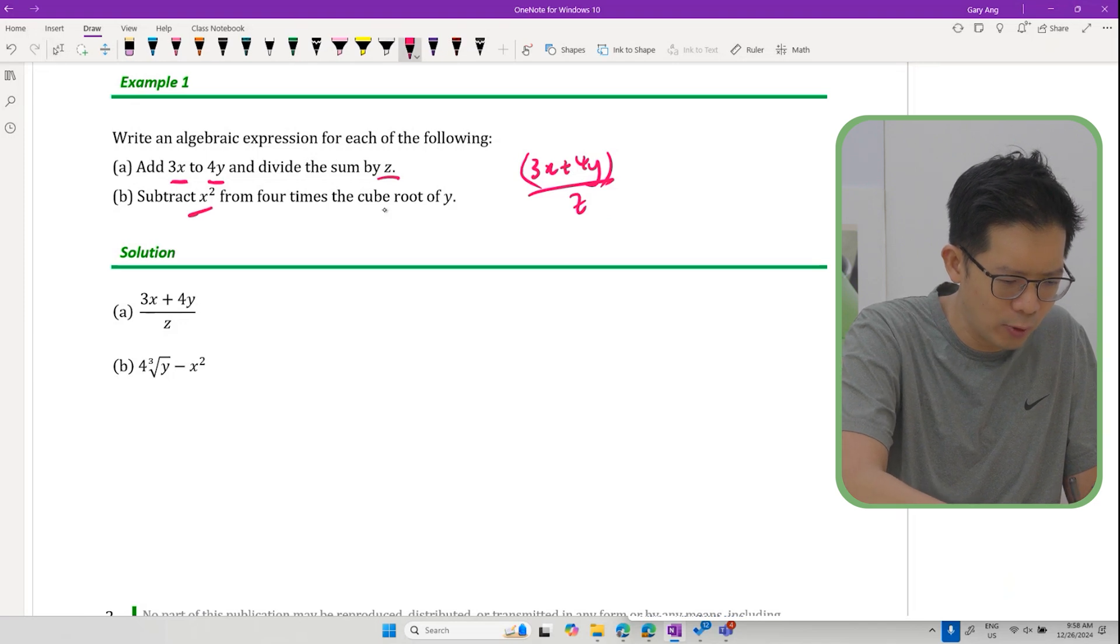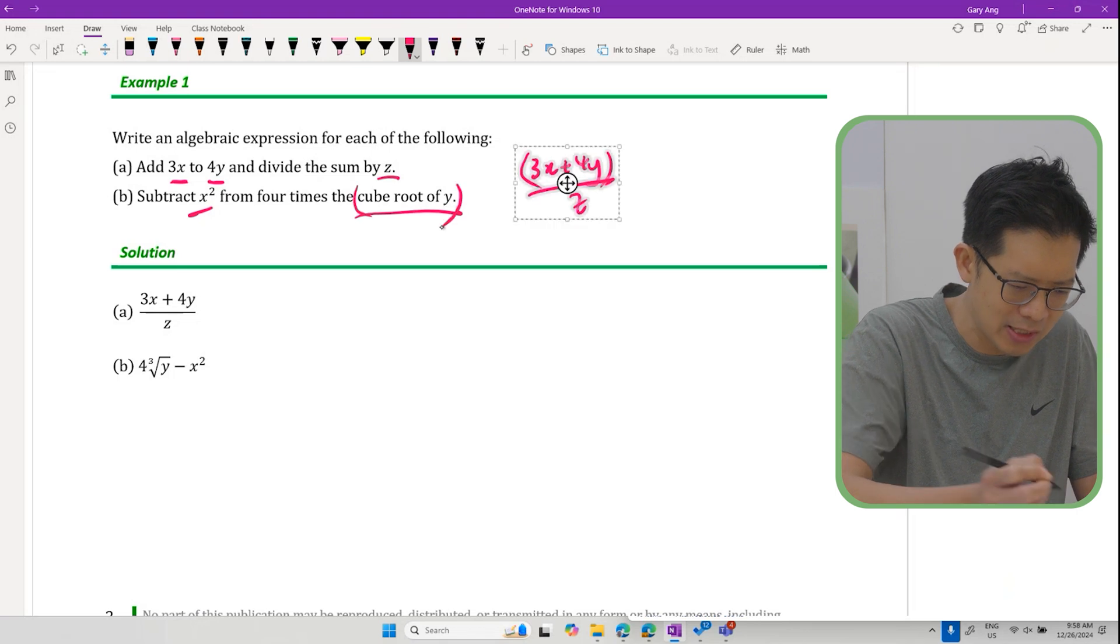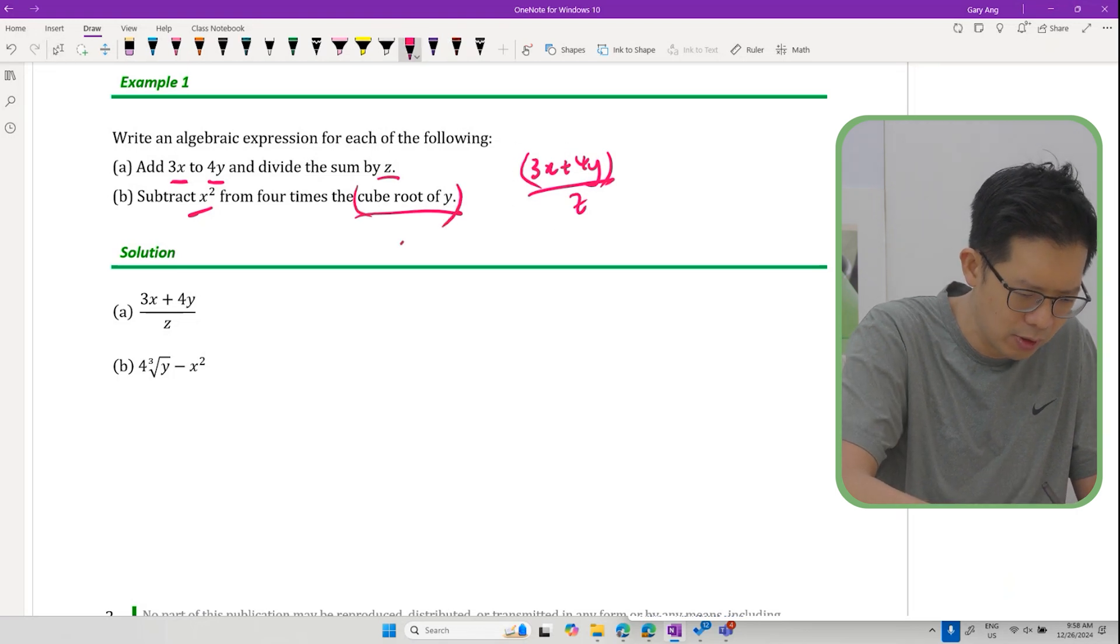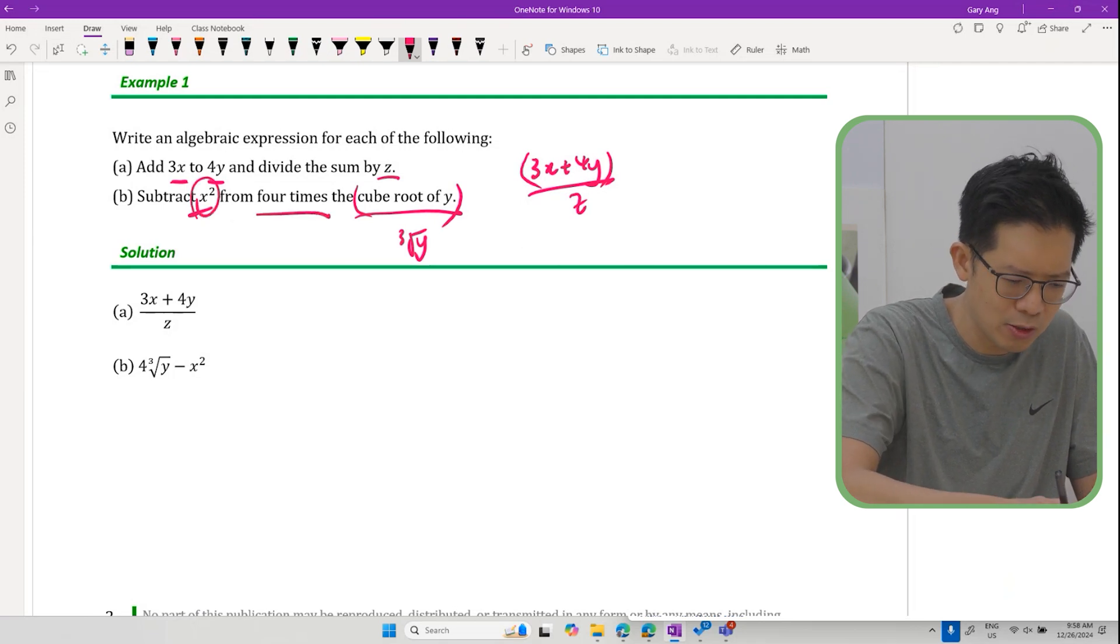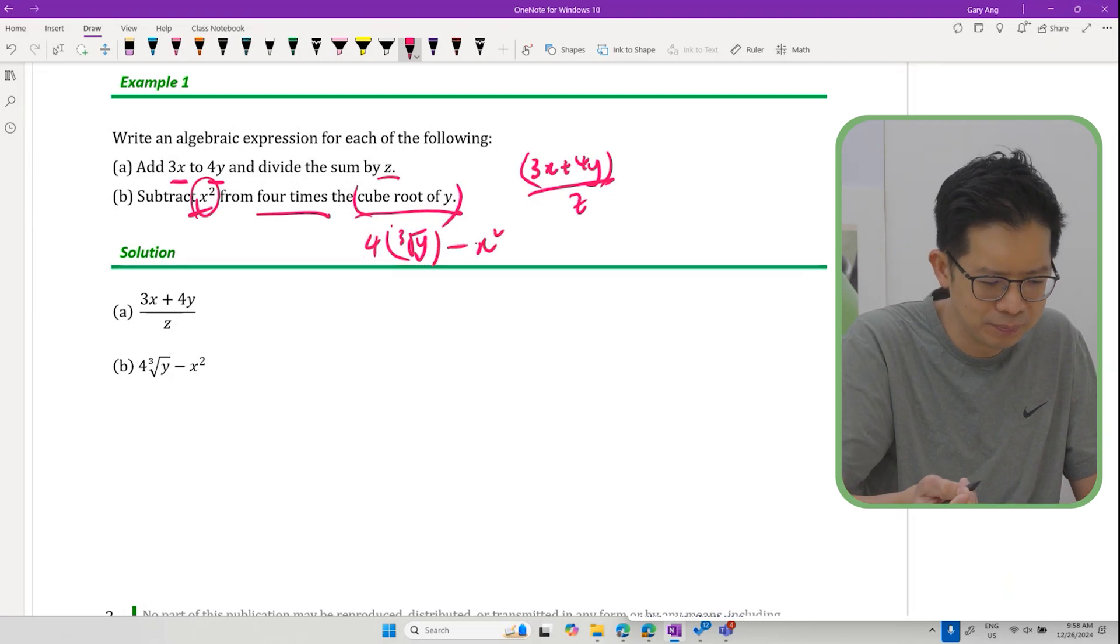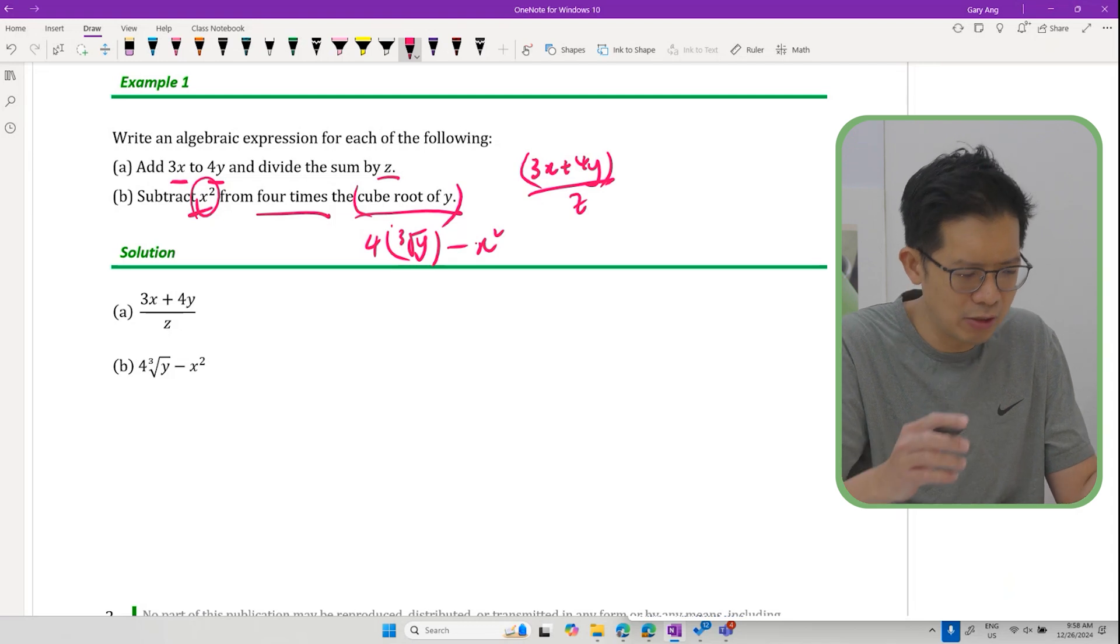Subtract x square from 4 times the cube root of y. There's this term called the cube root of y, which looks like this. We're supposed to subtract x square from four times this. We need to times four first and then subtract x square from this fella. If you read carefully it's not that bad.